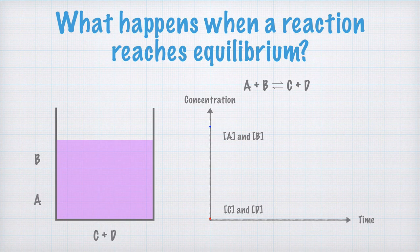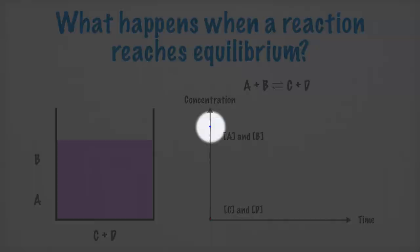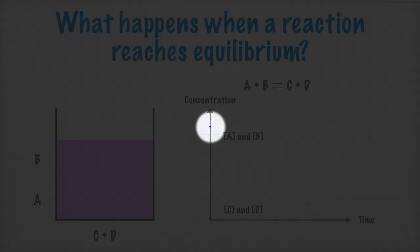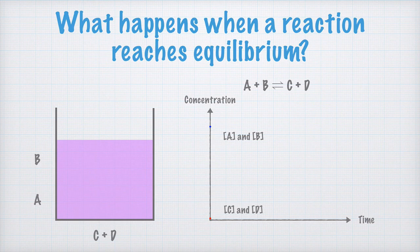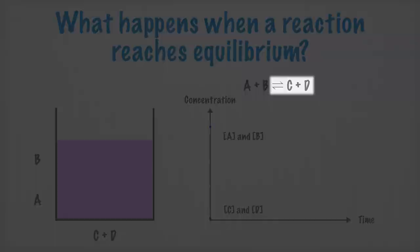But now, you may recall that one of the things that affect the rate of reactions is the concentration. Right here, at the beginning of the reactions, the concentrations of A and B, which I have drawn in blue, are quite high.